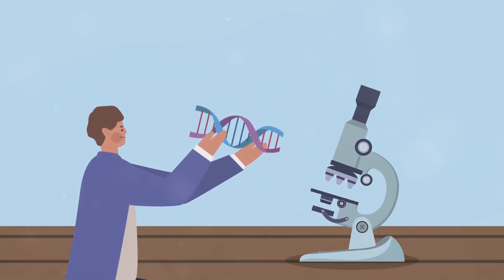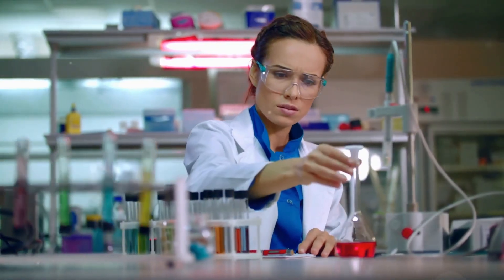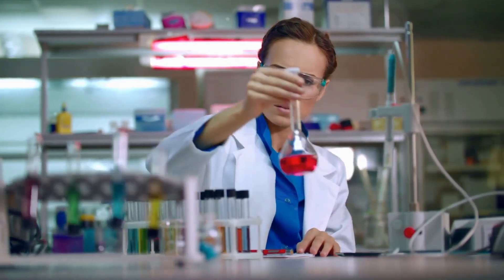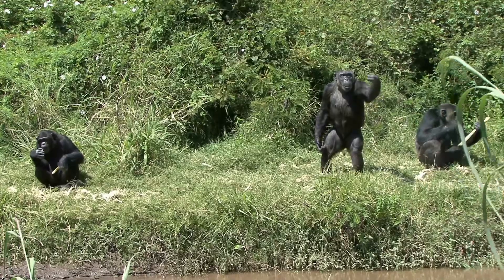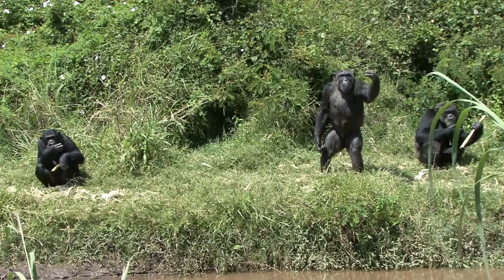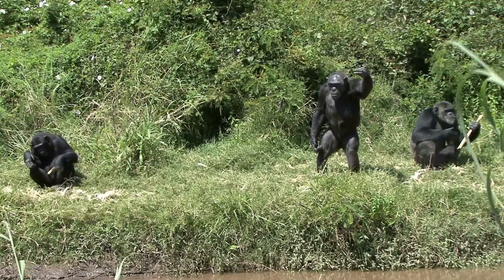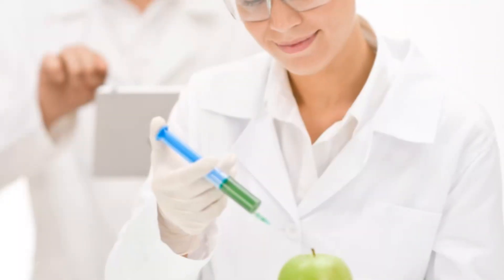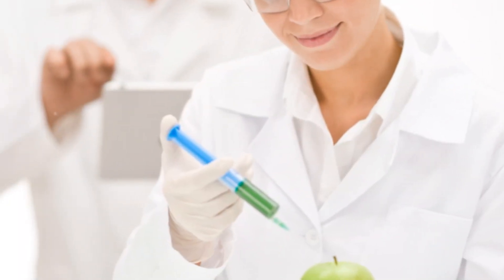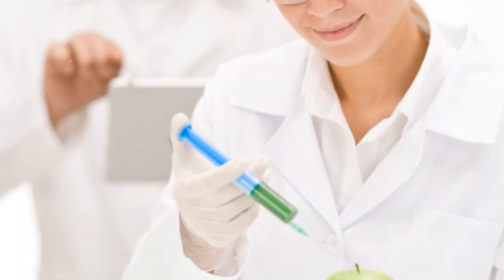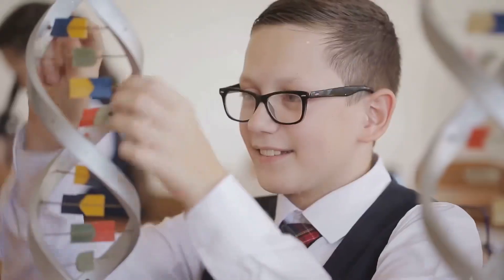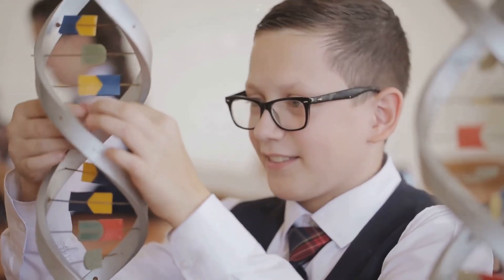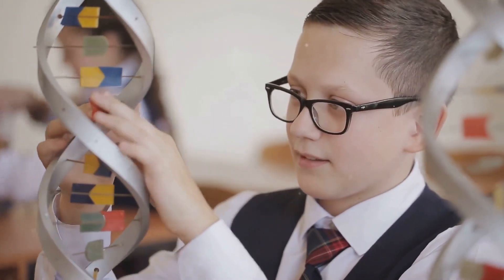While many people are familiar with basic genetic concepts, several fascinating aspects are less well known. For example, humans share about 98% of their DNA with chimpanzees, highlighting our close evolutionary relationship. Even more surprising, we share about 60% of our genes with fruit flies and 50% with bananas. Another interesting fact is that not all DNA codes for proteins. In humans, only about 1–2% of our DNA consists of genes that encode proteins.